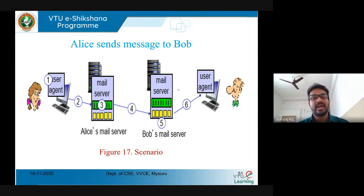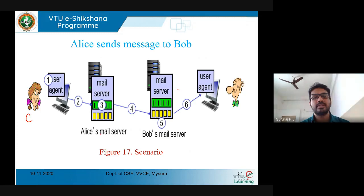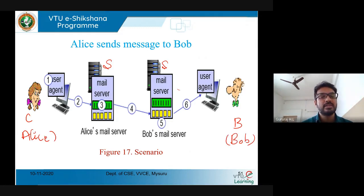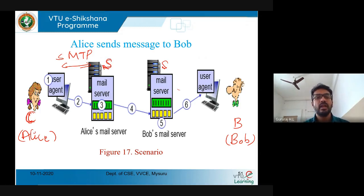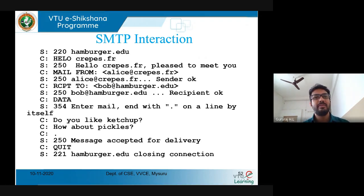Right now I have a scenario: let me call this as user agent A, or we can call it as the client, and the receiver as B — or we can also call this as Alice and Bob. Alice is going to have her own email address and Bob is also having his own email address. Whenever Alice wants to send a mail, she has to send it to her own mail server, and that interaction should happen with the help of SMTP protocol, between the client and the server.